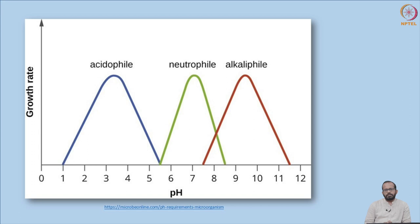Depending on pH preference, microorganisms are classified as acidophiles, neutrophiles, or alkalophiles. Acidophiles prefer a pH range of 1 to 5, neutrophiles prefer a neutral pH range of around 6 to 7.5, and alkalophiles prefer pH 8 and above.